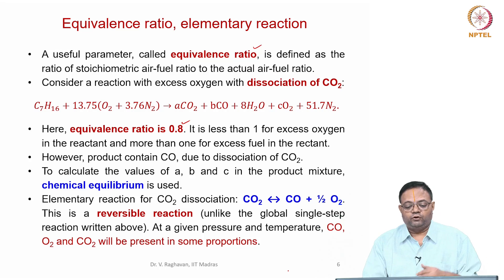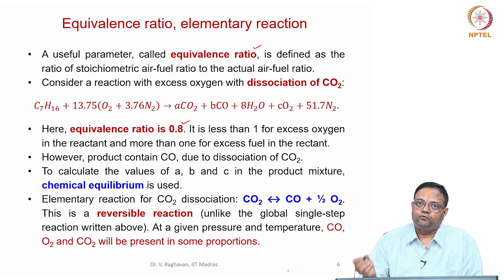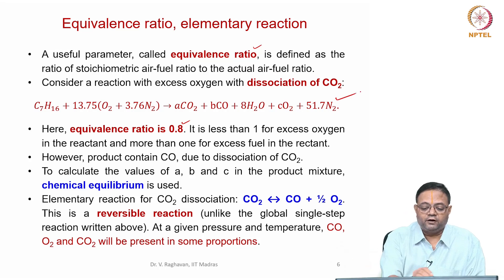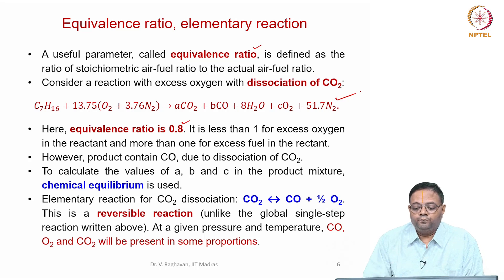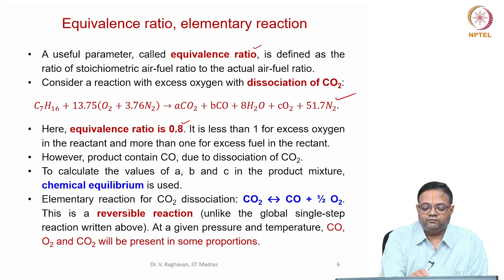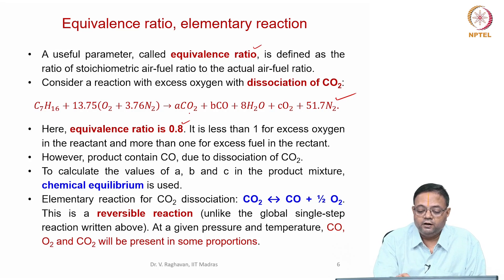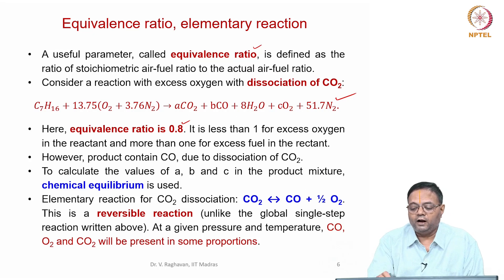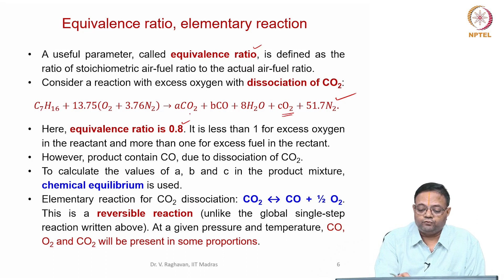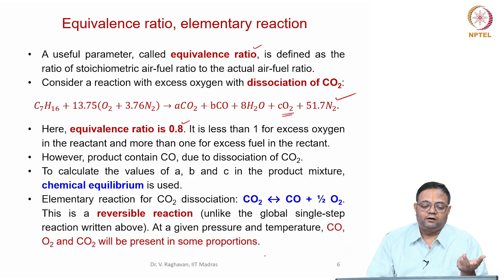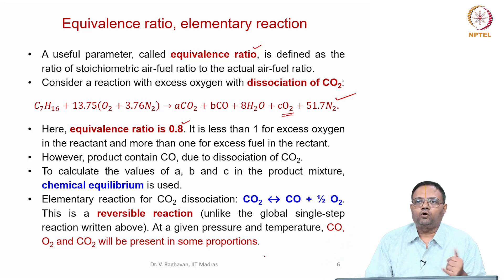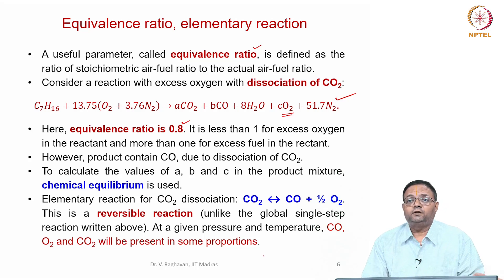If we consider a scenario where excess oxygen is supplied but dissociation also takes place, the equation can only be solved using the concept of chemical equilibrium. In the product side, there are A kilo moles of CO2, B kilo moles of CO, and C kilo moles of O2. Excess oxygen contributes O2 to the products, and dissociation of CO2 also contributes. To solve for A, B, and C, we have only two equations from atom balances — carbon balance and oxygen balance — so we need one more equation.